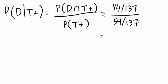which of course reduces to 44 over 54, and if you punch that into your calculator you see that it's 0.81. So you have an 81% chance of actually having the disease if you've tested positive. Pretty high.